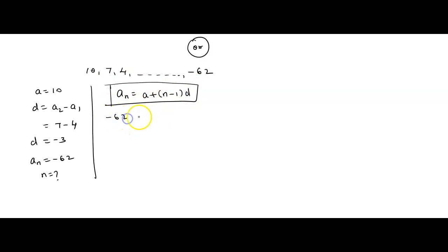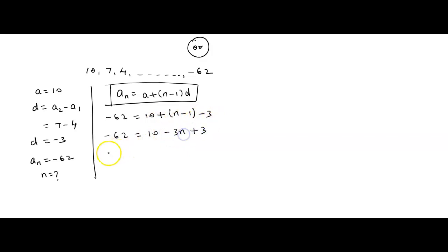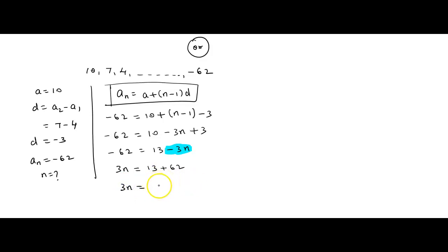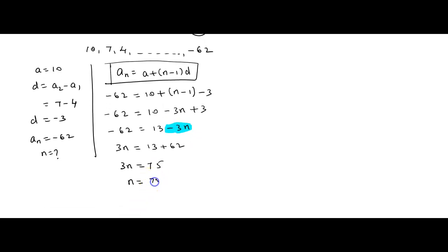So, minus 62 = 10 + (n − 1)(minus 3). Expanding: minus 62 = 10 minus 3n + 3, which gives minus 62 = 13 minus 3n. Bringing minus 3n to the left-hand side gives plus 3n, and bringing 13 to the right gives plus 62. So 3n = 13 + 62 = 75, and therefore n = 75 ÷ 3 = 25.